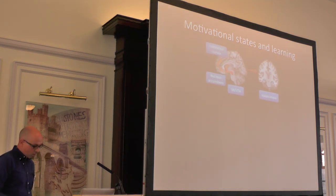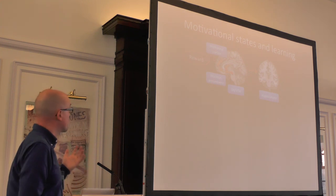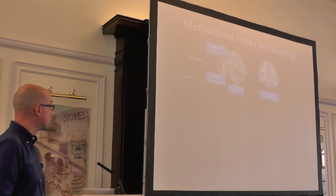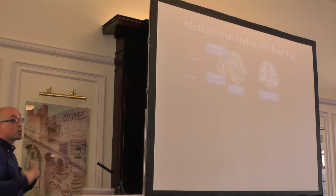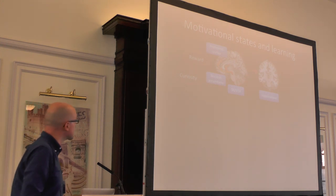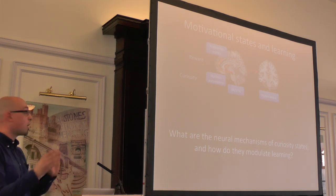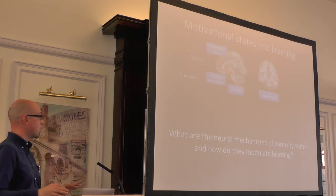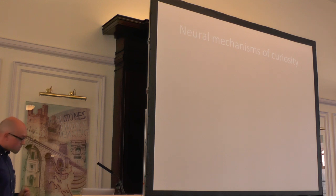We wanted to take this further and ask: knowing what we know from reward, how would curiosity influence activity in the same brain areas? We wanted to ask what are the neural mechanisms of curiosity states and how they modulate learning. I'm taking a step back from surprise and focusing just on the curiosity state. We have three questions to address: first, how does curiosity change brain activity; second, how does curiosity benefit learning of information associated with high curiosity; and third — most important to us — does simply being in a curious state benefit learning of neutral incidental information.